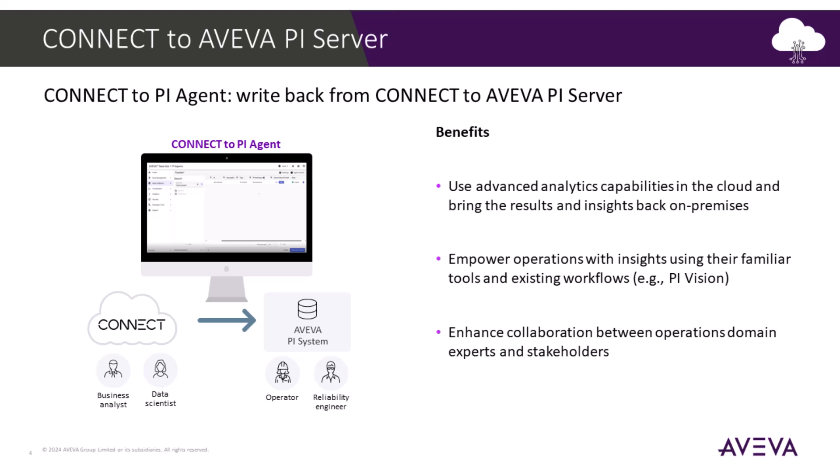For example, a common scenario: data generated on-premises and enriched in PI can be transferred to Connect, used in advanced analytics and models that produce outputs. Those outputs can be sent back to the PI server and displayed on a PI Vision screen to inform operational actions.